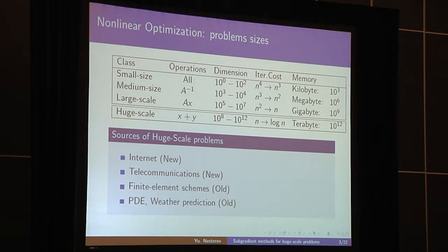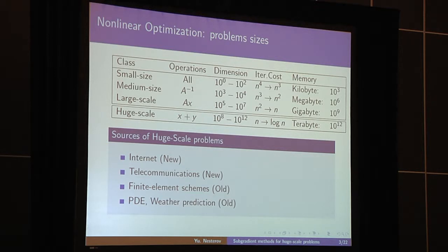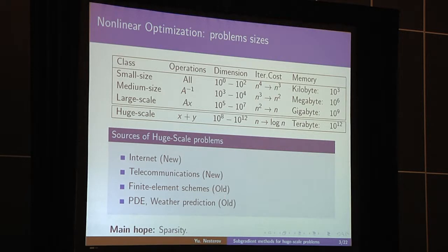The dimension of such problems defines the accuracy of the model, and in all applications we choose the maximal dimension just to increase the precision of our model. All these problems are finite-dimensional approximations of infinite-dimensional problems, and therefore they will always be at the limit of the computational abilities of numerical schemes. Of course, in all these problems, we have the only hope to solve them: we need to learn how to use their sparsity. Therefore, let us look at the typical structure of such optimization problems.